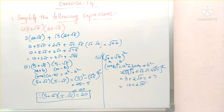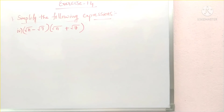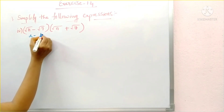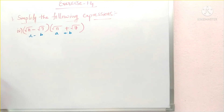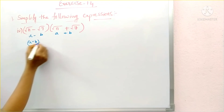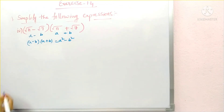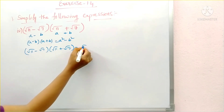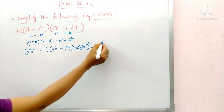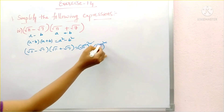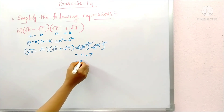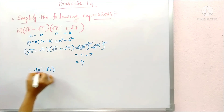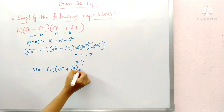Our fourth problem is root 11 minus root 7 into root 11 plus root 7. This is in the form of a minus b into a plus b, just like our second problem. The formula is a square minus b square. So root 11 whole square minus root 7 whole square — the square roots get cancelled — leaving 11 minus 7, which equals 4. Therefore root 11 minus root 7 into root 11 plus root 7 equals 4.